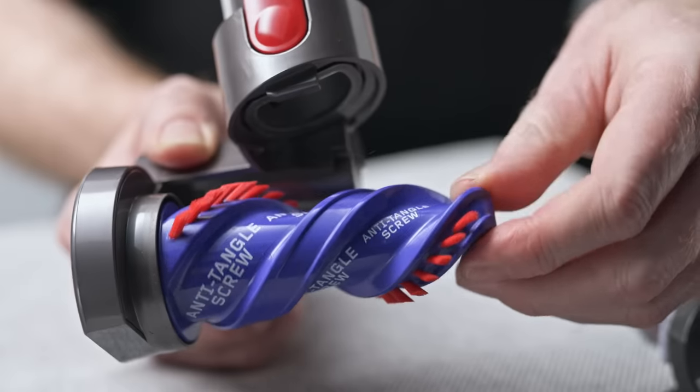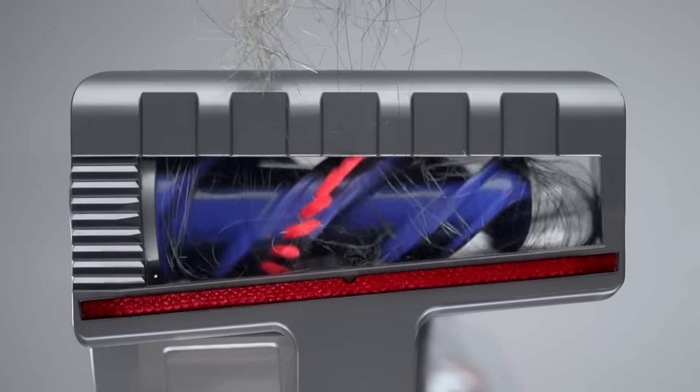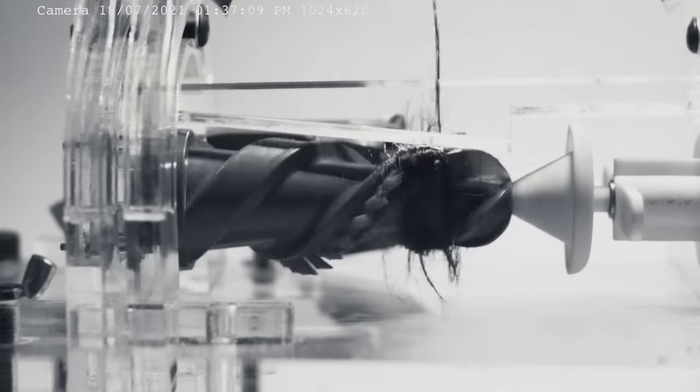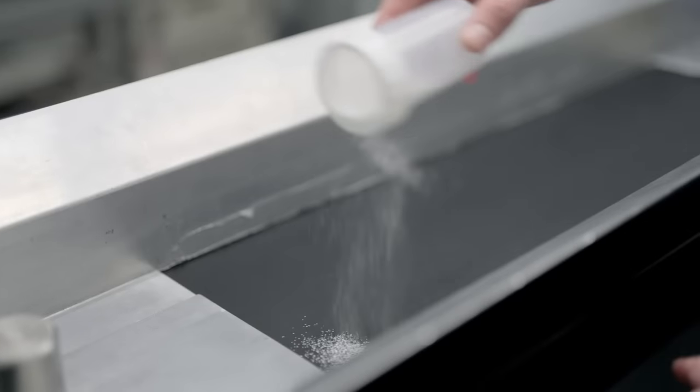The bristle strip that we've got here is angled in a direction that acts like an Archimedes screw and helps migrate hair from the far end to where the exhaust is so the hair can get removed easily.